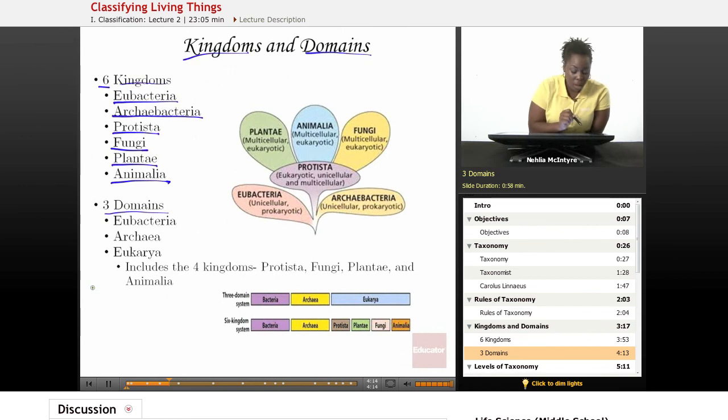We also have what we call domains. They're the larger group—actually larger than the kingdoms because there's only three of them, and all living organisms have to fit under these three. We have the domain eubacteria, the domain archaea, and the domain eukarya.